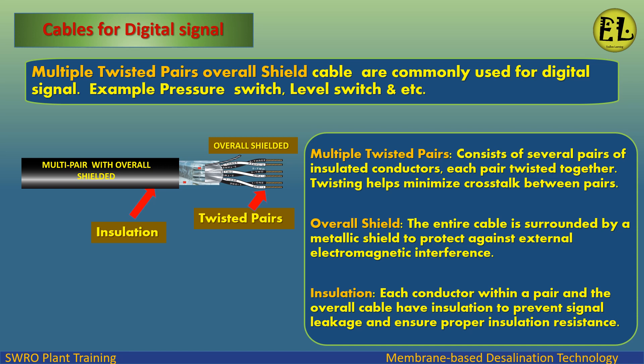Twisting helps minimize crosstalk between pairs. The entire cable is surrounded by a metallic overall shield to protect against external electromagnetic interference. Each conductor within a pair and the overall cable have insulation to prevent signal leakage and ensure proper insulation resistance.